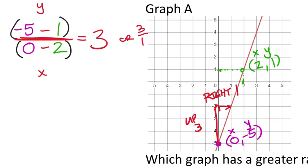It doesn't matter which ordered pair you use on a straight line—you have to find those points since no interval is given. We have the rate of change of 3, and we also found the y-intercept since it was one of the ordered pairs we used.